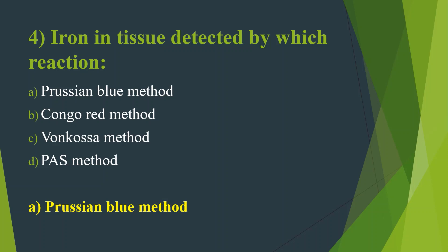Amyloid is detected by the congruent method. Von Kossa method is used for detection of calcium in tissue. PAS method — Periodic Acid-Schiff staining — is used for glycogen, glycoproteins, and mucins, that is polysaccharides.